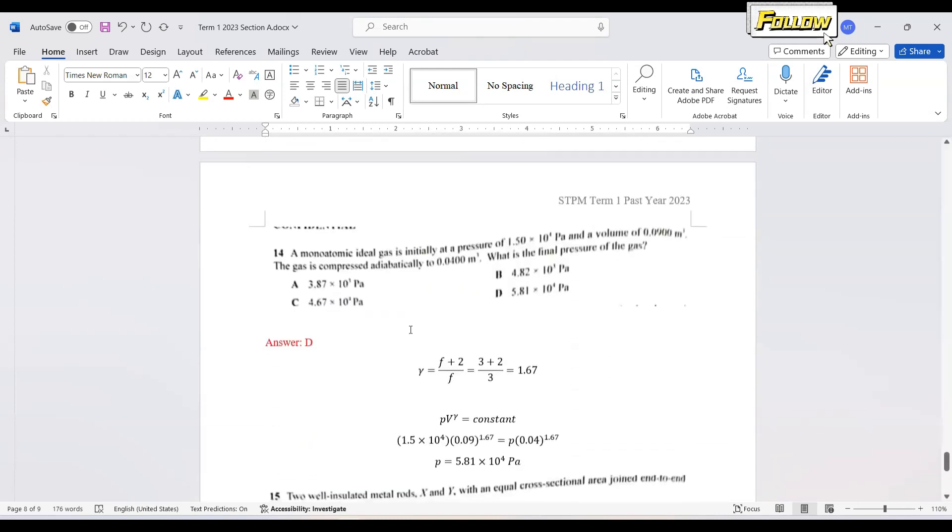We move on to question 14. A monoatomic ideal gas is initially at a pressure 1.5 times 10 to the 4 Pascal and a volume 0.09 meter cube. The gas is compressed adiabatically to 0.04 meter cube. What is the final pressure? You learn about this, where we have the adiabatic is referred to the equation of PV to the power of gamma is a constant. Before that, the gamma, which is the ratio of the molar heat constant, where we have the formula as f plus 2 over f. Don't forget about the formula. And here it mentioned that it is a monoatomic.